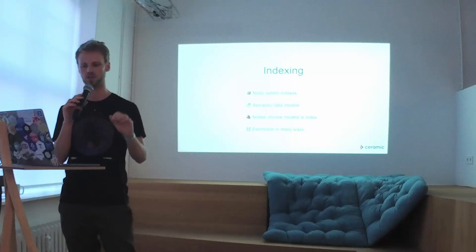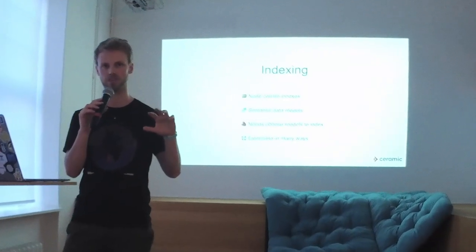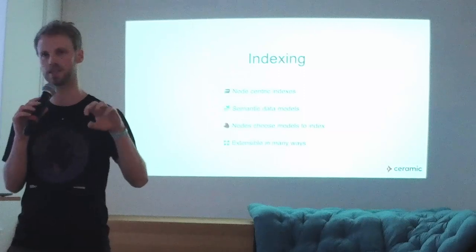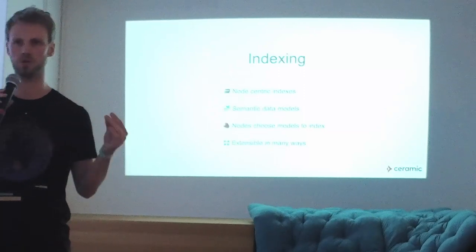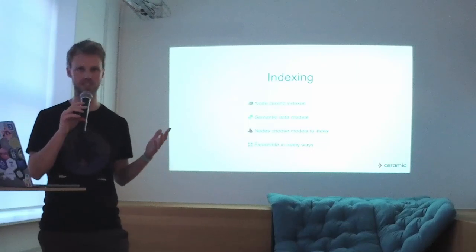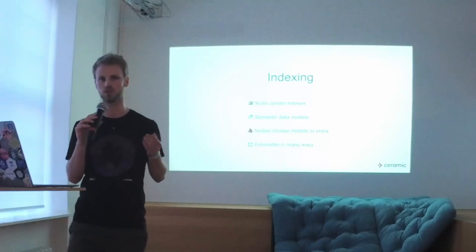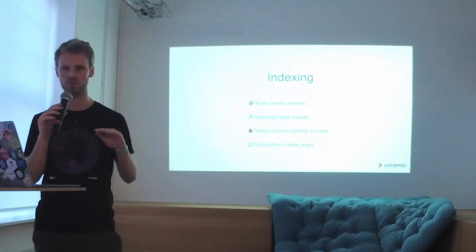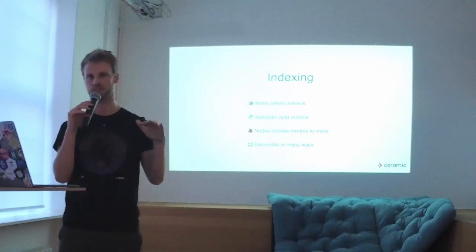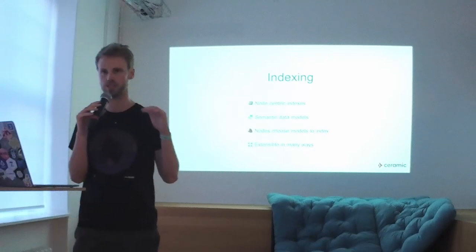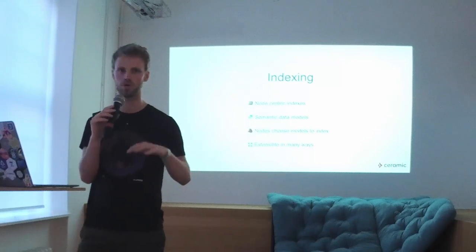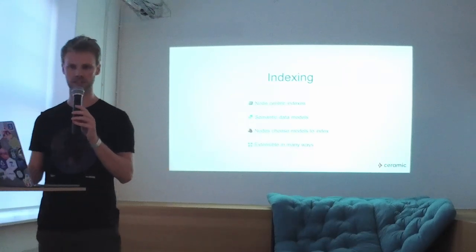On top of the event streaming layer we have the indexing layer. Each node in the network can choose to build an index on top of the event streams, and they can choose which data to index. We have an abstraction called data models, which allows you to create a subset of data that semantically describes the data you might use for your application. Each node can choose which model to index and doesn't need to index data for the entire network. This is what really makes it scalable. Also, if someone is not satisfied with the default indexing, they can plug directly into the event streams, read the data, perform actions based on events, or build a different sort of index. This flexibility is really key.